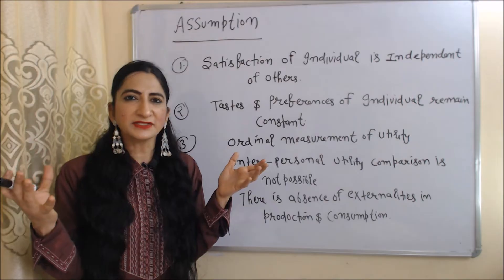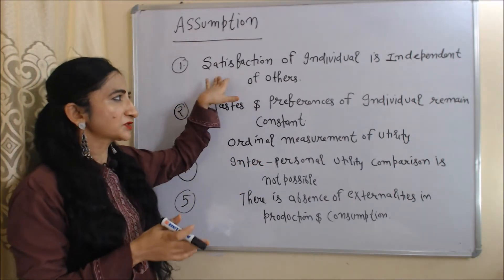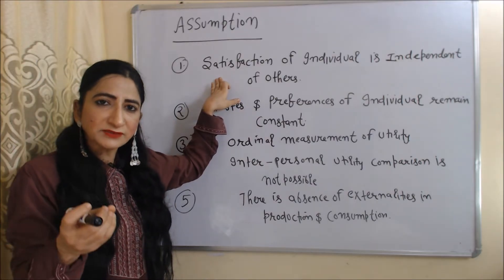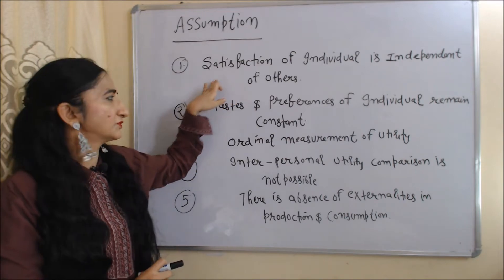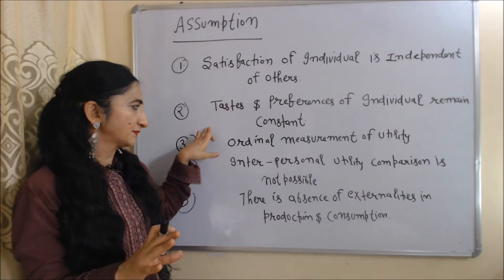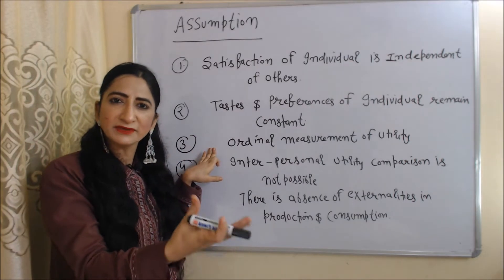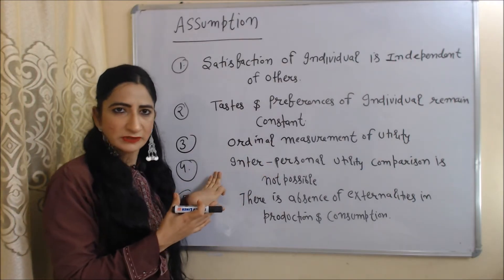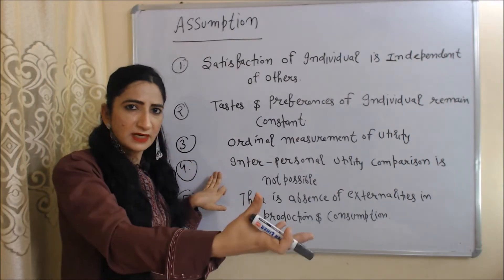Now we are going to discuss the assumptions of this criterion. The first assumption is that the satisfaction of an individual is independent of others — meaning the satisfaction of one individual does not depend on the satisfaction of other individuals. Tastes and preferences of individuals remain constant. Ordinal measurement of utility — meaning we can measure utility by giving ranks. Interpersonal utility comparison is not possible, meaning we cannot compare the utility of one person with another.